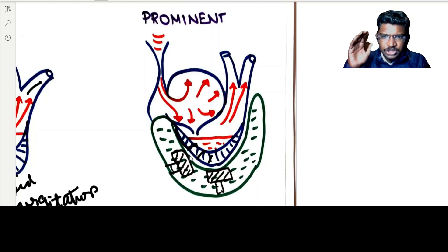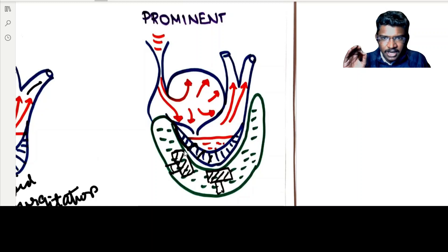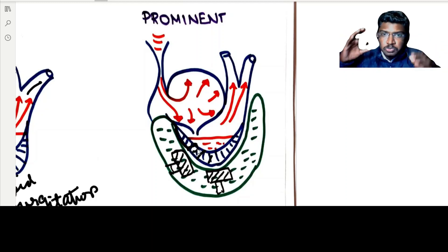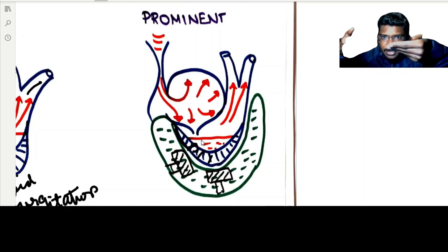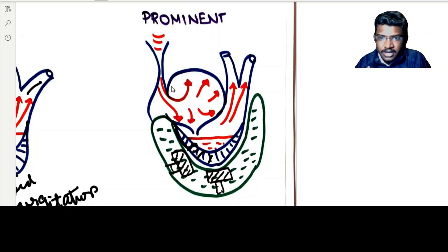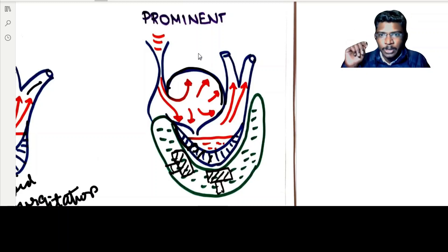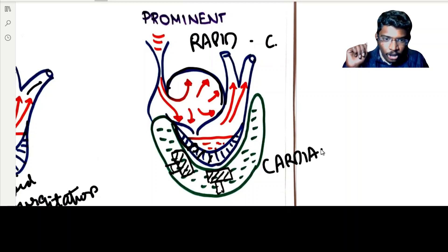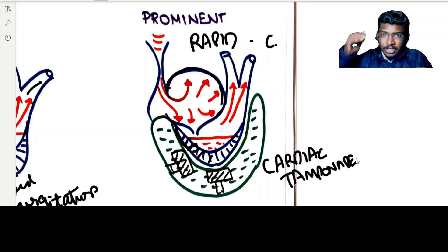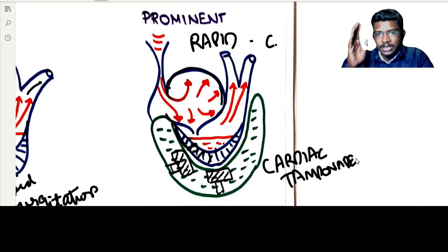In cardiac tamponade, excess fluid accumulates in the pericardial cavity and compresses the heart. The right ventricle is already compressed, so it contracts more vigorously and pulls the right atrial floor more downward, creating a more spacious right atrium. All the blood accumulated in the jugular veins will rapidly come into the right atrium — that is exaggerated relaxation of the right atrium and an exaggerated fall in right atrial pressure. This is rapid X descent seen in cardiac tamponade. Also in cardiac tamponade, pressure in the jugular veins is too high and they try to seep into the right atrium at any point, contributing to rapid X descent.